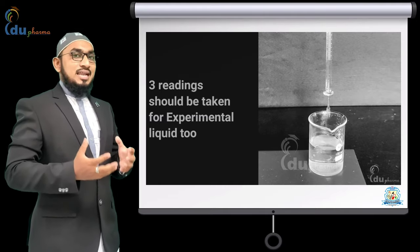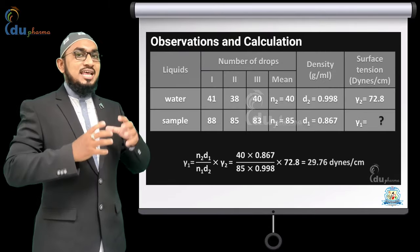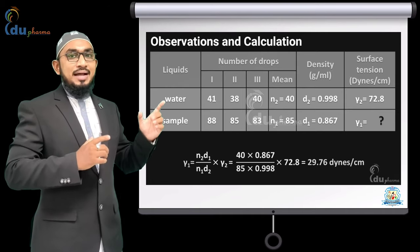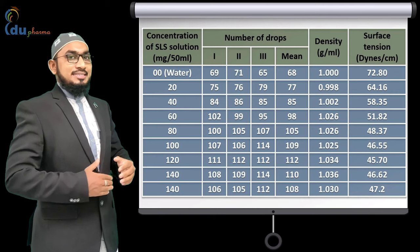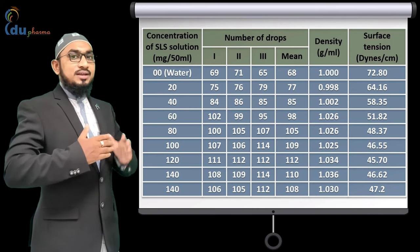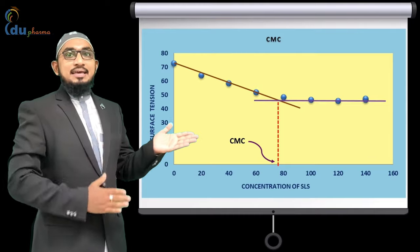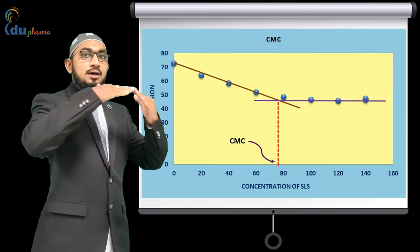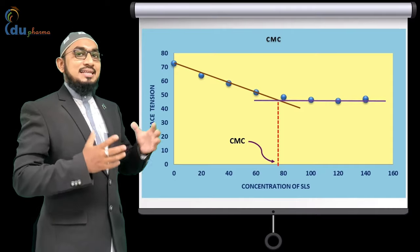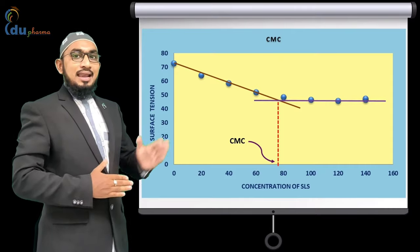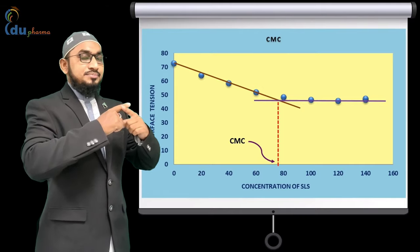To determine critical micellar concentration of sodium lauryl sulfate, we have to determine the surface tension of different concentrations of sodium lauryl sulfate in water by using the drop formation method. In this way, we can have an observation table and use this data to plot a graph of different concentrations of surfactant versus their surface tension, taking concentration on the x-axis and surface tension on the y-axis. We can observe a sharp break where surface tension stops changing, indicating that micelles start to form at that point of concentration. A line can be drawn on the x-axis at the point where the two lines intersect, and in this way we can have the value of critical micellar concentration from the graph.